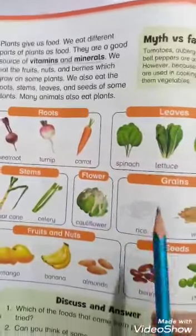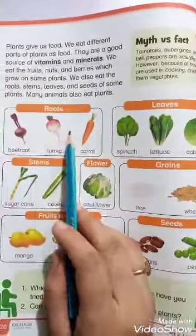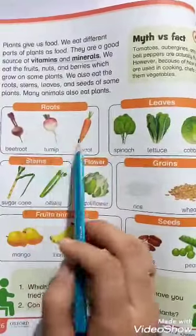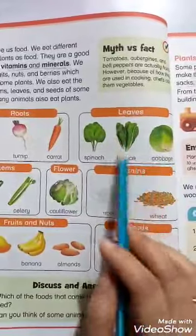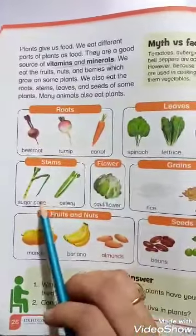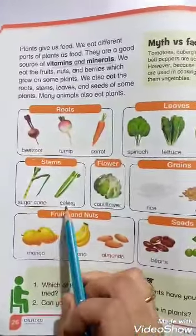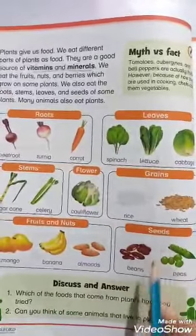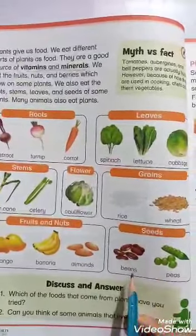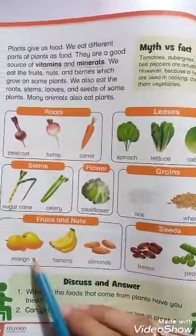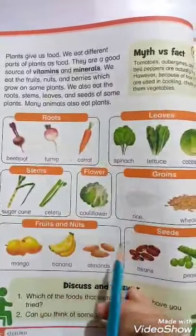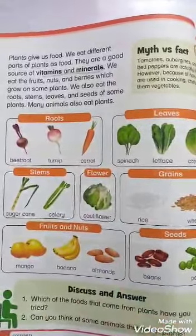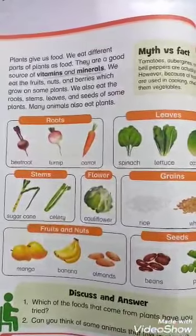There are different parts of a plant we eat. The roots — for example, beetroot, turnip, carrot. Leaves — spinach, lettuce, cabbage. Stems — sugarcane. And the flowers — cauliflower; grains — rice; seeds — beans, peas. And the fruits and nuts — mangoes, bananas, almonds. These are the different parts of a plant we eat as food, because they are a good source of vitamins and minerals.